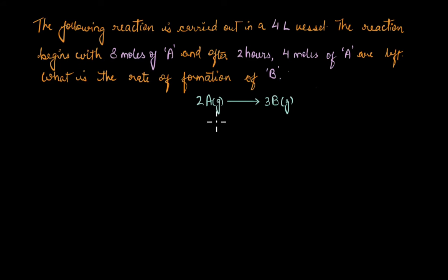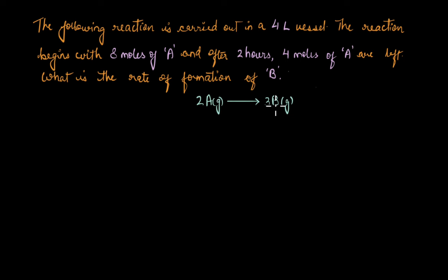In this video we are going to discuss a couple of problems on the effects of stoichiometry on reaction rate. Let's look at the first question: the following reaction is carried out in a four-liter vessel. The reaction begins with eight moles of A, and after two hours four moles of A are left.